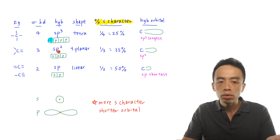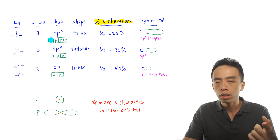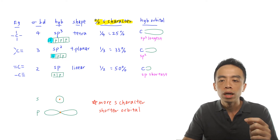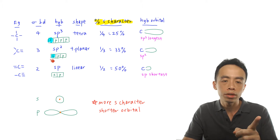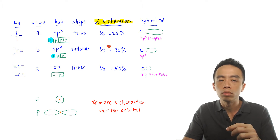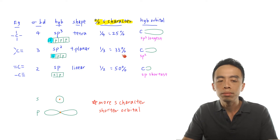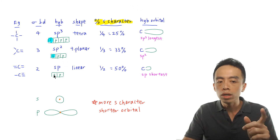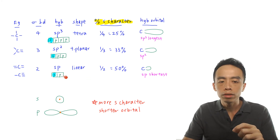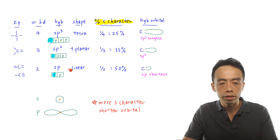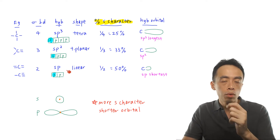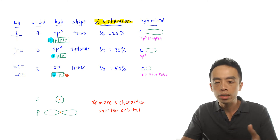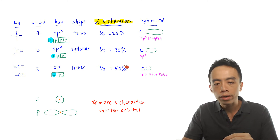For sp2 hybridized, out of three orbitals being mixed, only one comes from the s orbital, so the percentage s character is one third, or 33%. Then finally, for sp hybridized orbital, out of two orbitals being mixed, only one is the s orbital. So this will be 50% s character — out of two orbitals, one is s and the other is p — giving 50% s character.